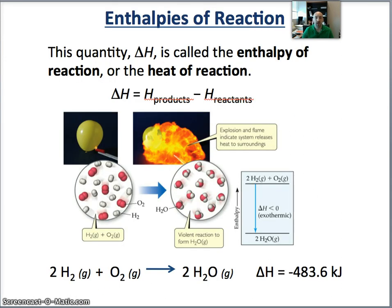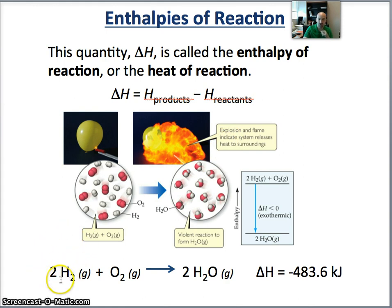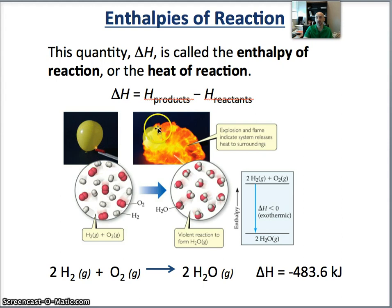The delta H for the reaction is called the enthalpy of reaction, or the heat of the reaction, and it's equal to the enthalpy of the products minus the enthalpy of the reactants. For example, two moles of hydrogen gas reacting with one mole of oxygen gas to form two moles of water has a delta H of minus 483.6 kilojoules. That negative sign says the reaction is exothermic — heat is being released to the surroundings, as we see when a hydrogen-filled balloon is ignited.